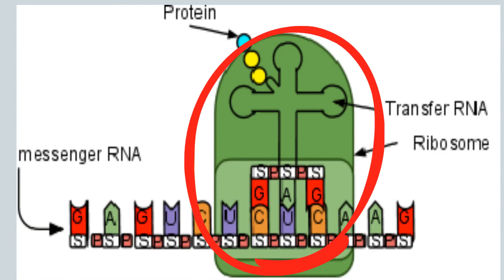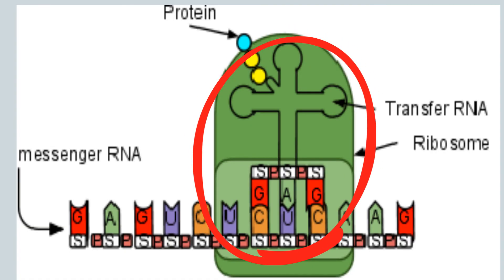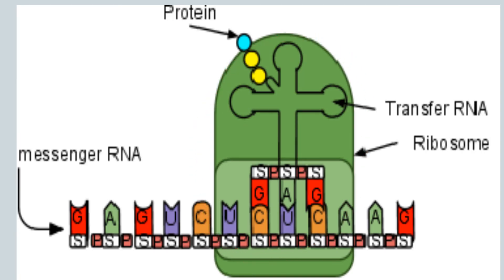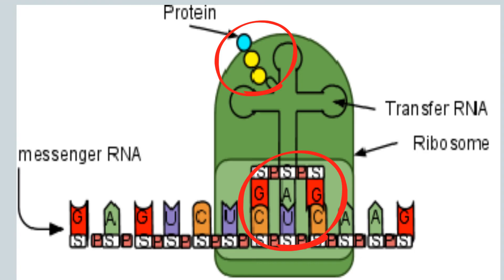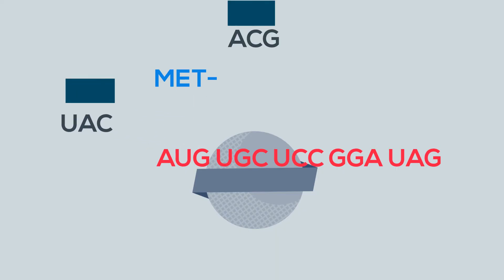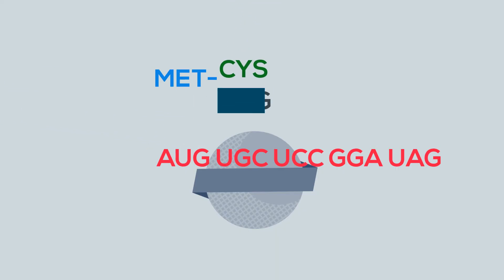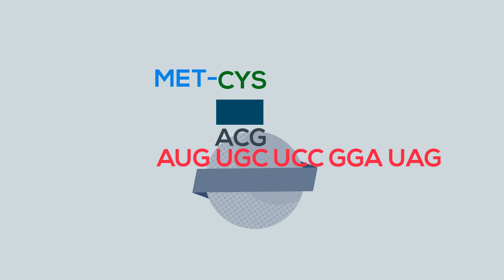A tRNA has an amino acid on one end and an anticodon on the other. tRNA will continue to string amino acids together until it reaches a stop codon.